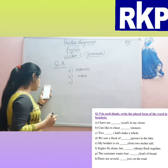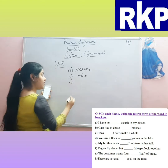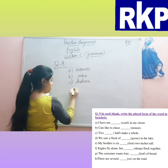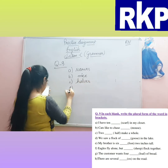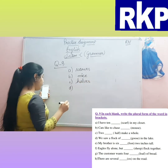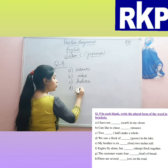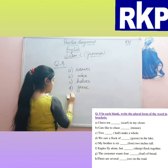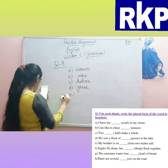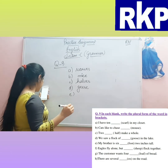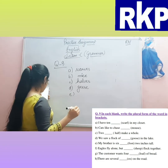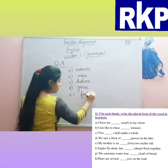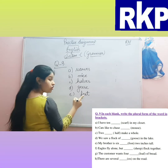C: 'Two ___ make a whole.' — Two halves. D: 'We saw a flock of ___.' — Goose becomes geese. E: 'My brother is six ___ two inches tall.' — Six feet. Foot becomes feet.